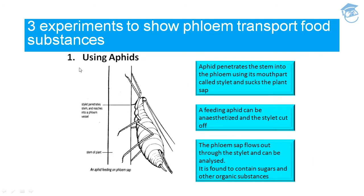There are three experiments that show phloem transports food substances. But first, know that the girdling experiment is used to identify the tissue through which food is transported. On the trunk of a tree, a ring of bark up to a depth of the phloem layer is carefully removed. In the absence of downward movement of food, the portion of bark above the ring becomes swollen after a few weeks, showing that phloem is responsible for translocation of food.